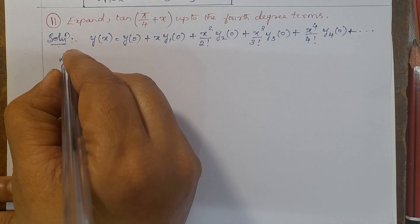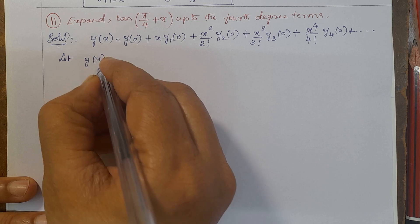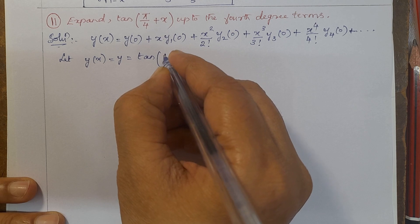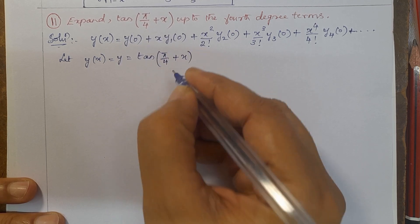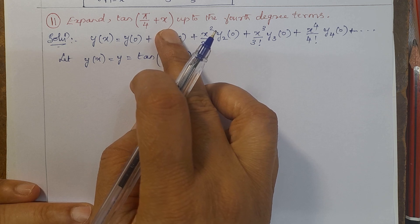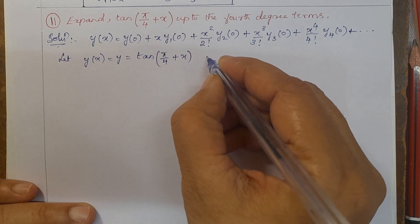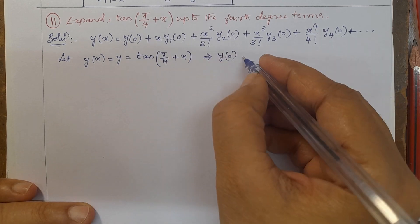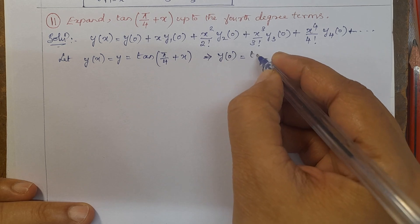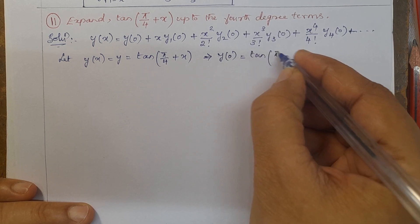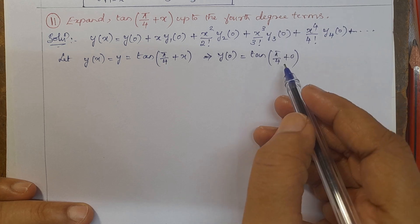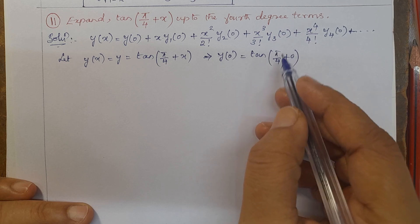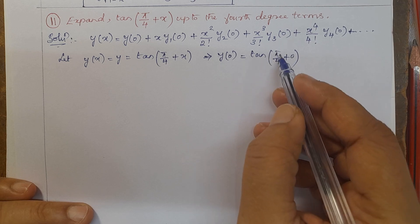Let y(x) = tan(π/4 + x) as given in the problem. Now we find y(0): substituting x = 0 gives tan(π/4 + 0) = tan(π/4). Since π/4 is 45 degrees and tan(45°) = 1, we get y(0) = 1.